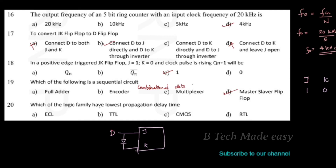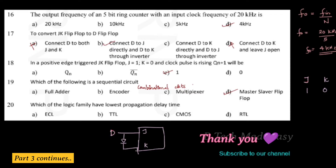Next question: which logic family has the lowest propagation delay? The options are ECL, TTL, CMOS, and RTL. The correct option is ECL, which has the lowest propagation delay.